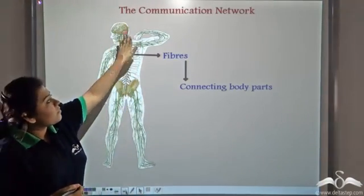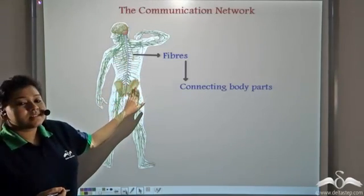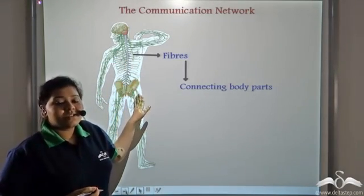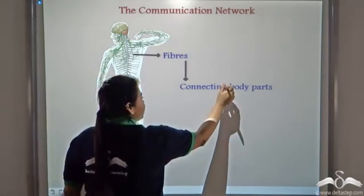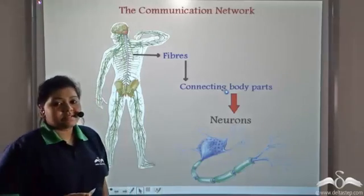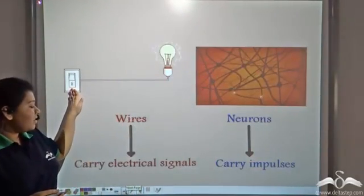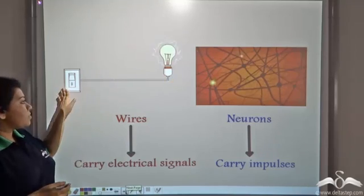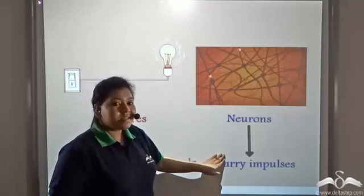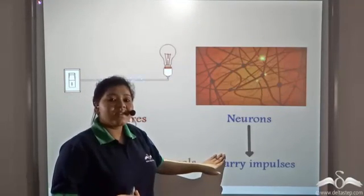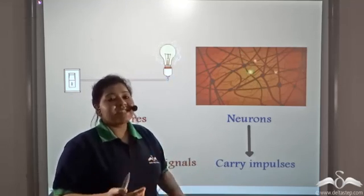Well yes, see there are fiber-like structures connecting all the body parts and these fiber-like structures that form a connecting network in the body is known as the neurons. So just like a wire carries electrical signals from a switch to the bulb, these neurons carry impulses or messages to the different parts of the body because they form a connecting network.